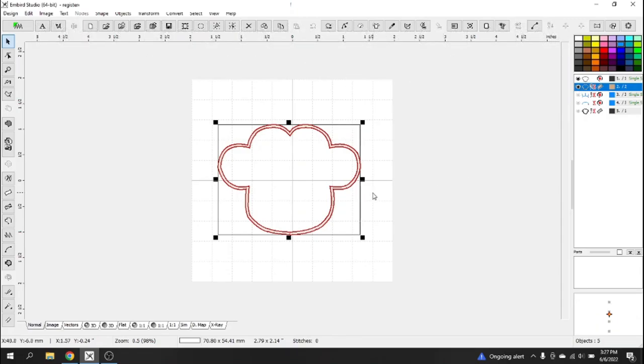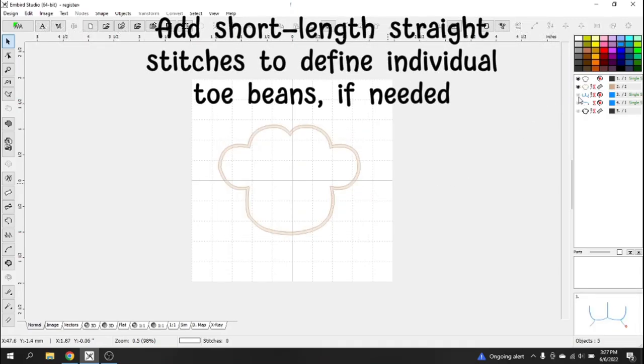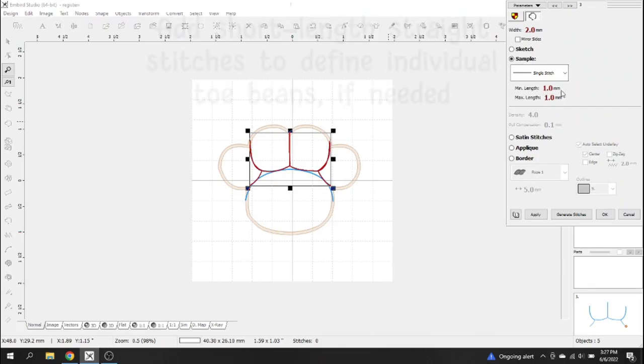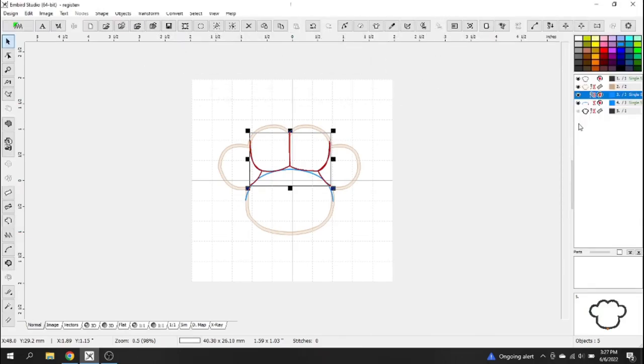If you're doing a gathered look, you also need to add a stitch to define each bean. I use a straight stitch with a lower 1mm length. You should tack down the outside first and then stitch out the individual ones next to avoid the fabric from shifting.